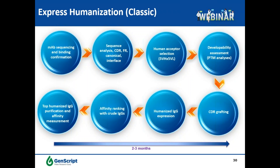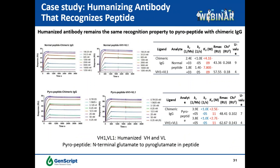In our express humanization package, we use the classic CDR grafting strategy, where the antibody sequence is analyzed to select the best human germline acceptors for murine CDRs. We typically select five heavy chain and five light chain acceptors. Recombinant humanized antibodies are then expressed and purified for affinity ranking, and the best antibodies are selected for affinity characterization. In a case study for humanizing an antibody recognizing peptides, after humanization we identified antibodies with comparable affinity and specificity against parallel and normal peptides.